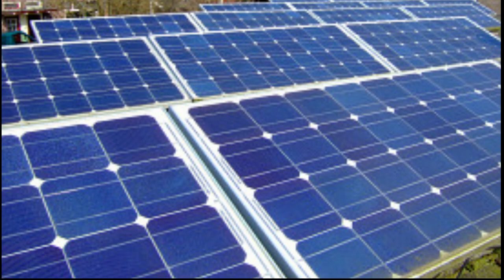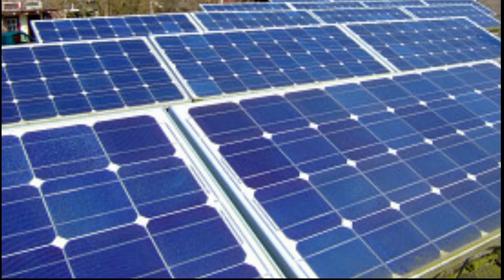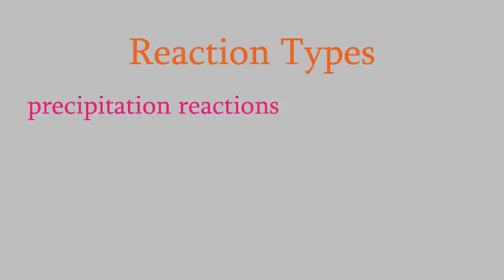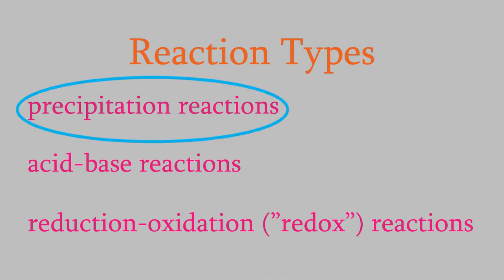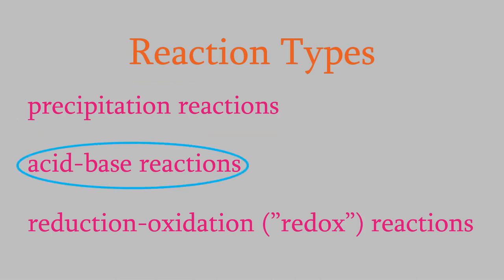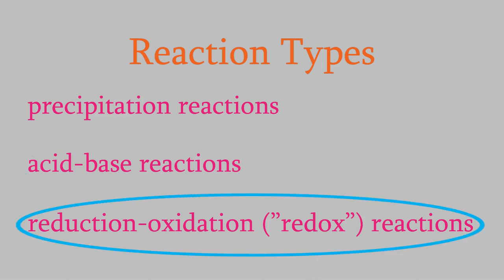To begin, we'll revisit a topic you saw very briefly way back in the early days of General Chemistry 1. Back then, you found out that there are three general types of chemical reactions: precipitation reactions, acid-base reactions, and reduction-oxidation or redox reactions. We talked about precipitation reactions recently in video 26, and of course we've talked about acids and bases in several videos. Now we'll delve more deeply into redox reactions.